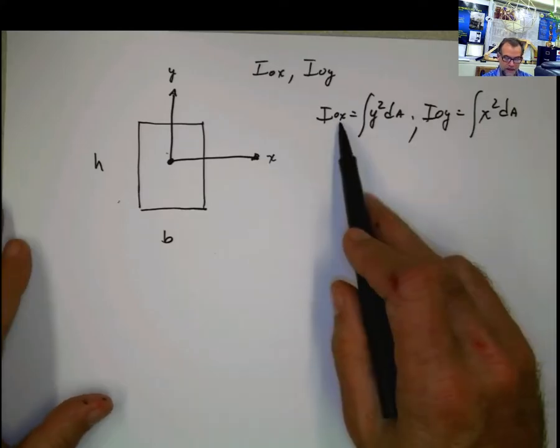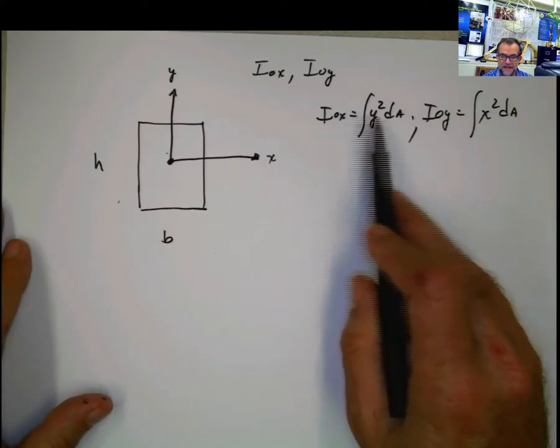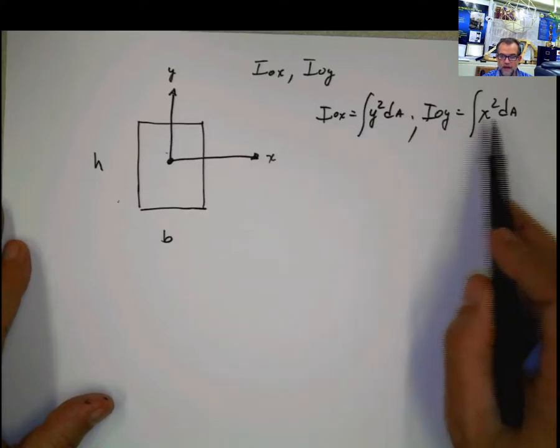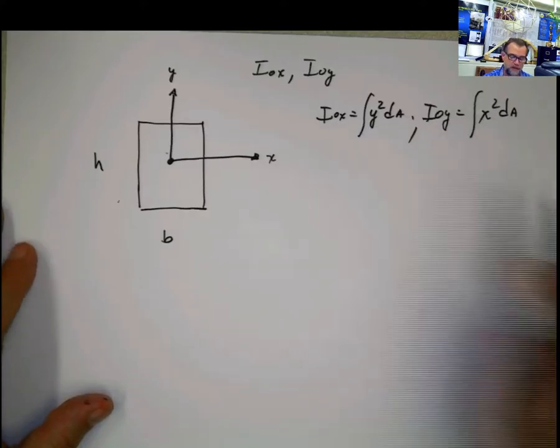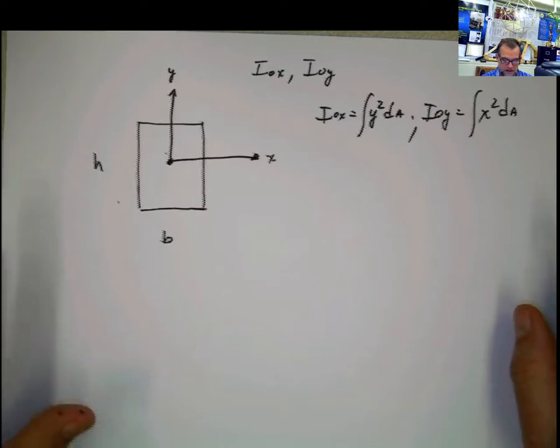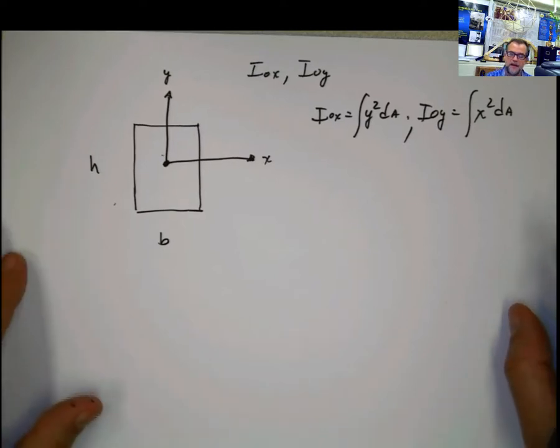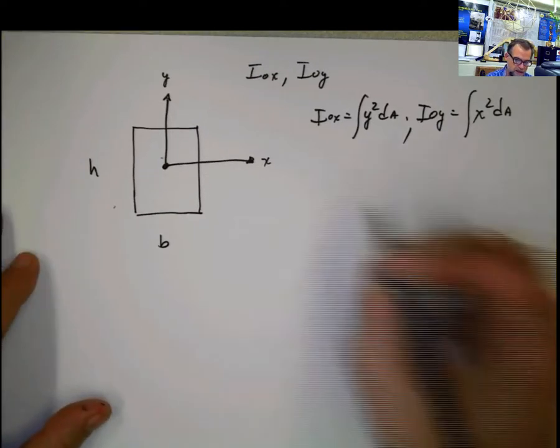But in this case, because it's moment of inertia, this is x and this is y. This is y and this is x. So be very careful with that, because that might look really simple. But you have no idea how many times I have seen that error in my exams. So let's do that.